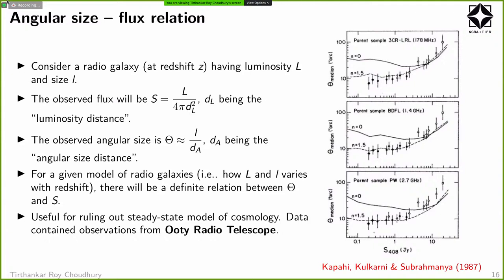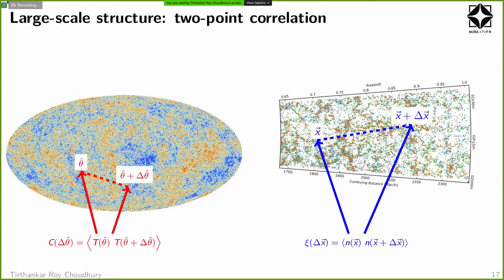Later, once COBE went up and CMB observations came coupled with large-scale structure observations, we know that the steady state model cannot describe the observations — it's the evolving Big Bang. Now, in cosmology, when applying radio galaxies, you are not talking about the properties of radio galaxies themselves but rather using the distribution of radio galaxies as a probe of large-scale structure. A concept that plays an important role here is the two-point correlation function.